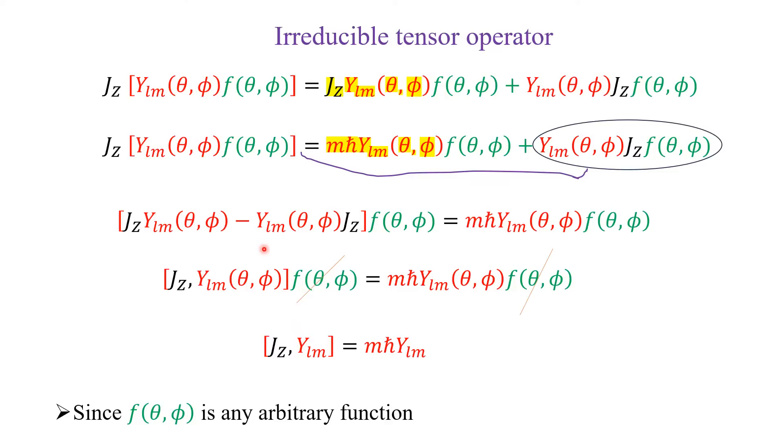So, this is nothing but, this left-hand side is nothing but, you have the commutation relation between J_z and Y_{l,m}. And both sides, you have the function F. So, it can be cancelled. So here, you can cancel this and this.